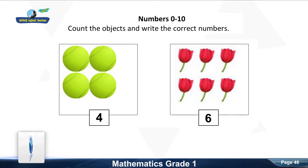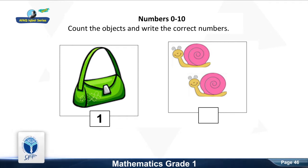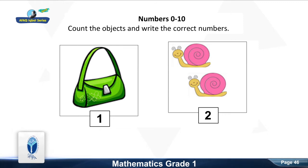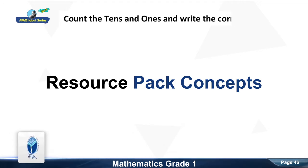Good, it is 6. Count the bag. Good, it is 1. Count the snails. Good, it is 2.